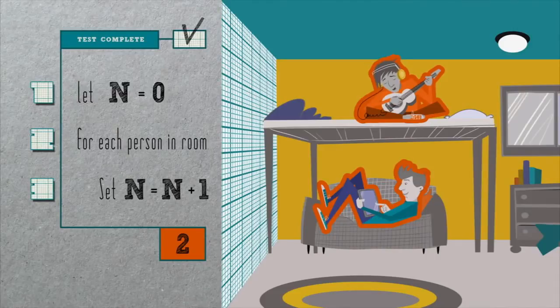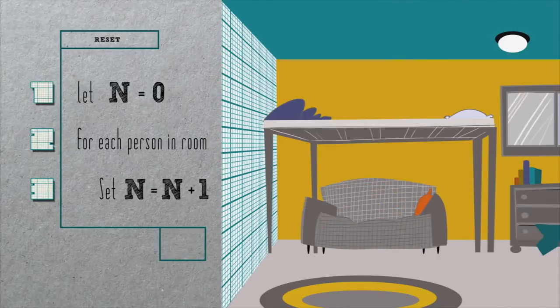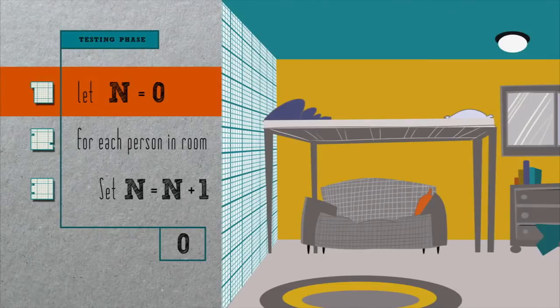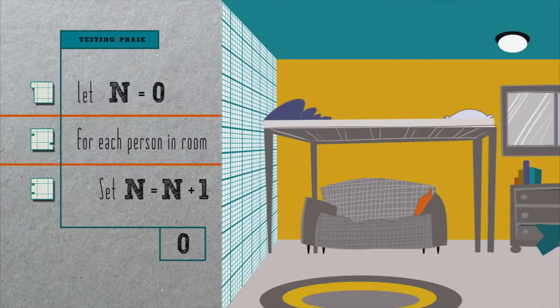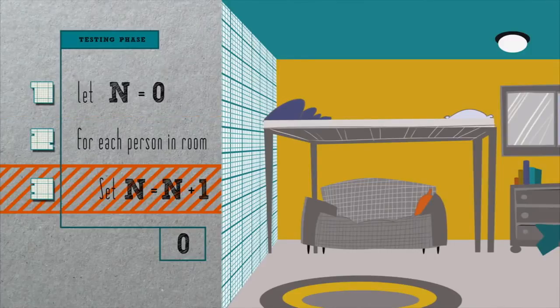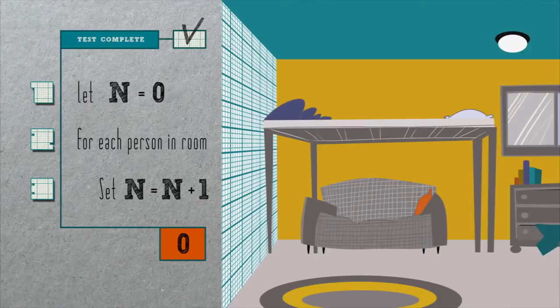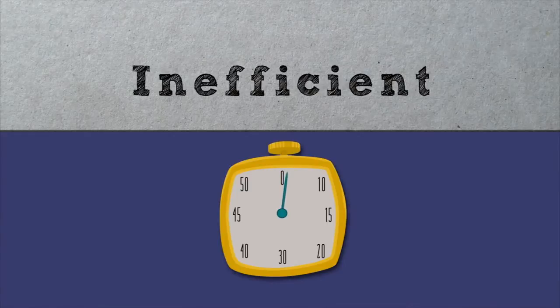How about a corner case, though? Suppose that there are zero people in the room, besides me, who's doing the counting. In line one, we again initialize n to zero. This time, though, line three doesn't execute at all, since there isn't a person in the room, and so n remains zero, which indeed matches the number of people in the room. Pretty simple, right? But counting people one at a time is pretty inefficient, too, no?